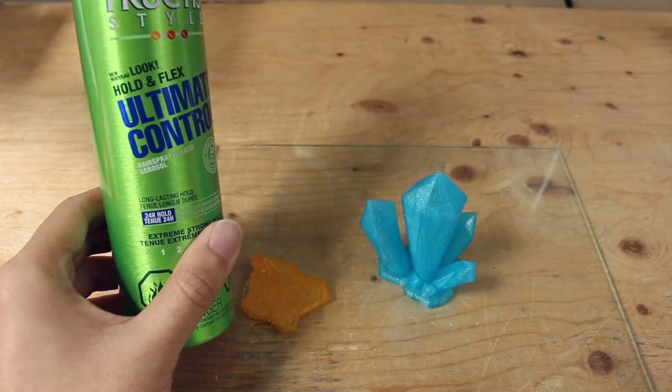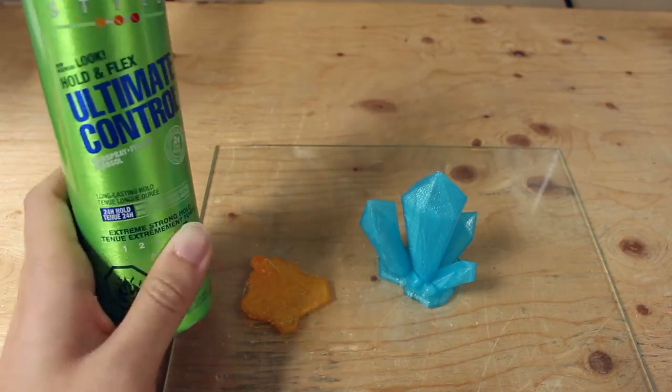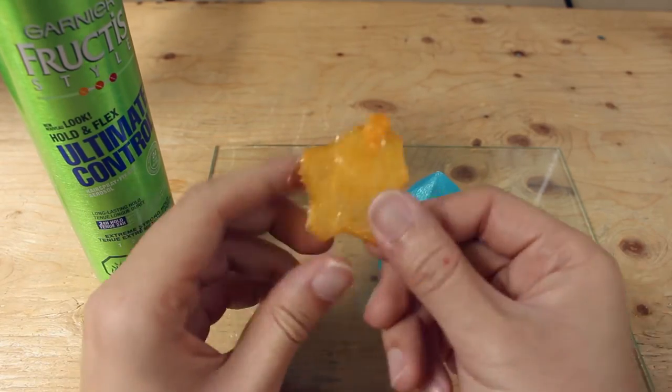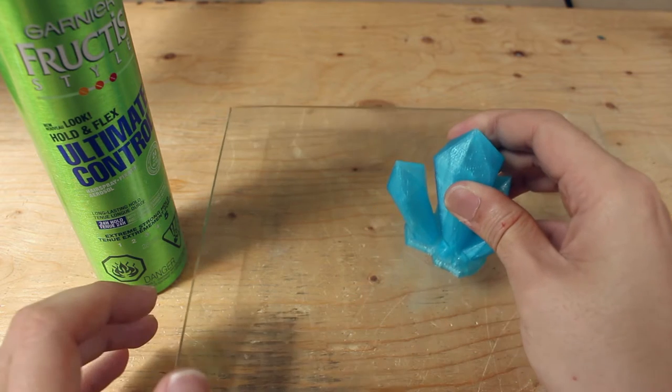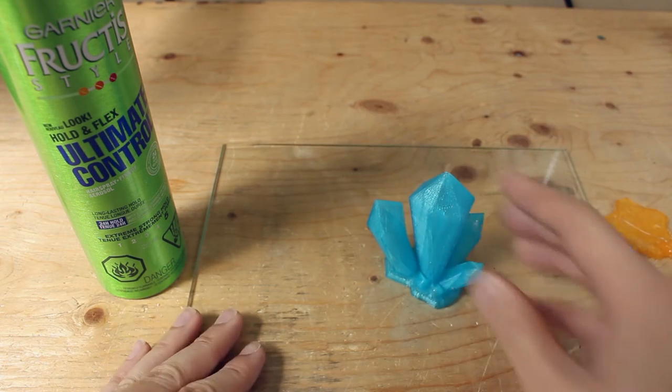Fructis Style Ultimate Control Extreme Stronghold on the other hand did not work with one coat, but when we drenched it, the filament stuck on and the crystal printed out perfectly.